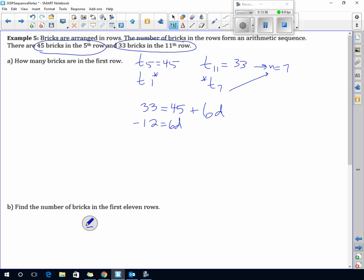Once we know the common difference, we can go work back. Let's use this for working back. So 45 equals term 1, plus, because N is 5 there, 4 times minus 2. So that is minus 8. If I move the minus 8 over, I get 53 is term 1.